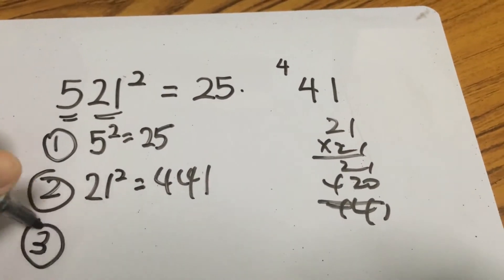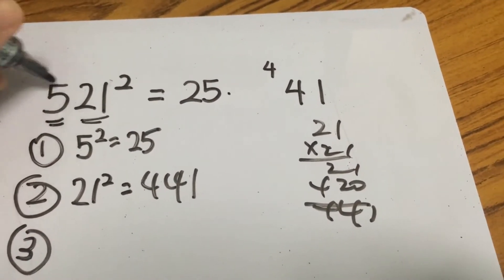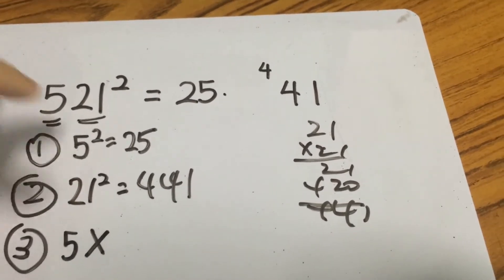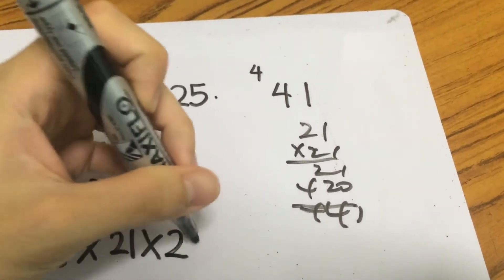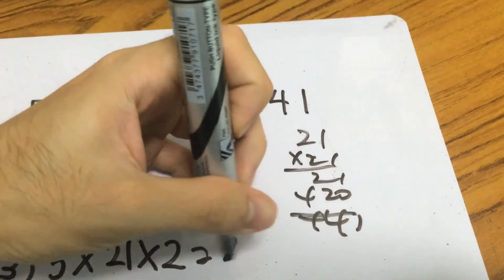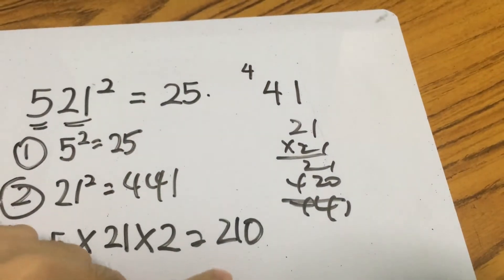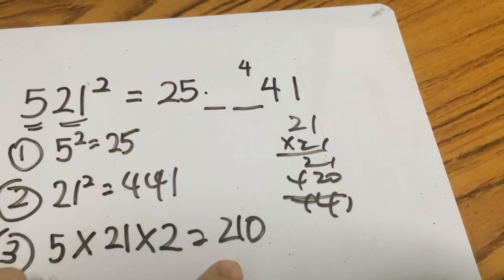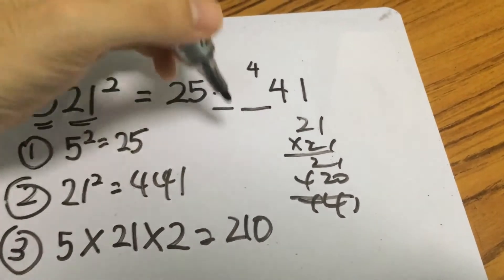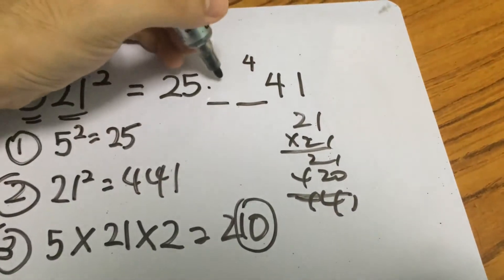And last but not least we will take the first digit itself multiplied by the last two digits which is 21 and multiply by the power. So this is 42 times 5 gives you 210 and in this case you must know that you can only fill the last two digits like this.